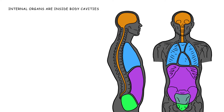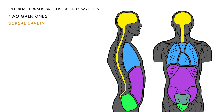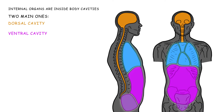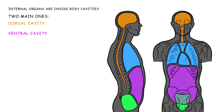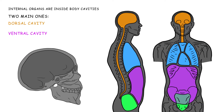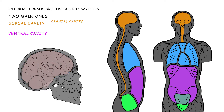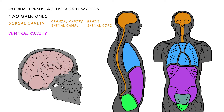The internal organs are inside body cavities. The two main cavities are the dorsal and ventral cavities. The dorsal cavity includes the cranial cavity, which houses the brain, and the spinal canal, which houses the spinal cord.